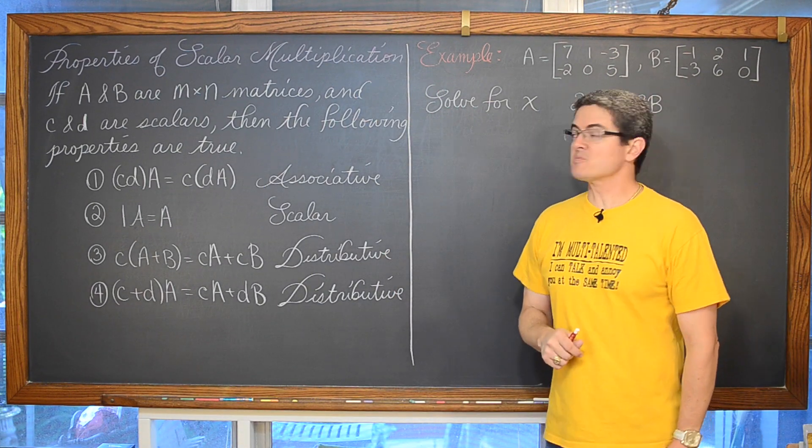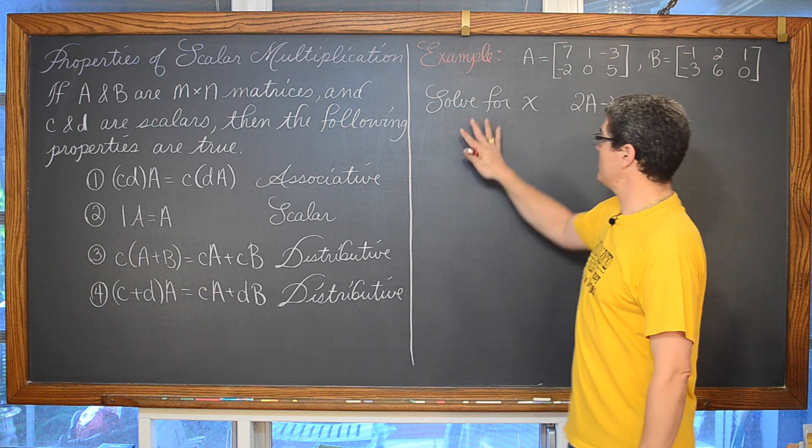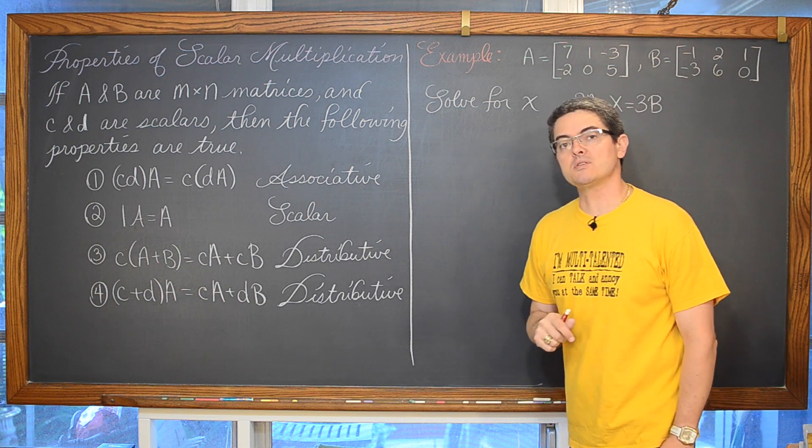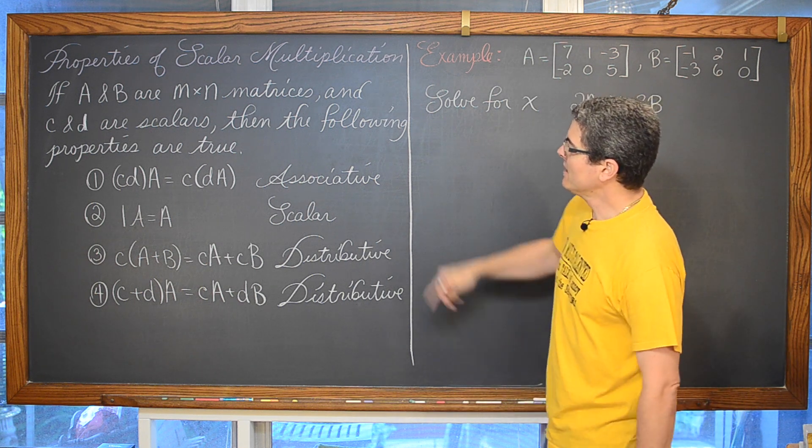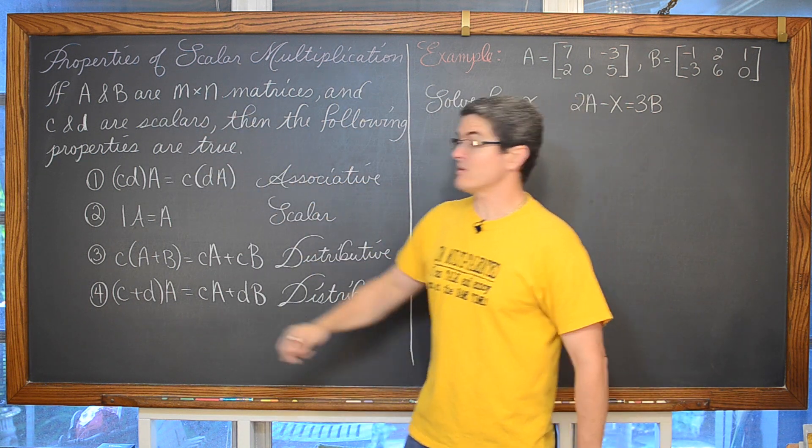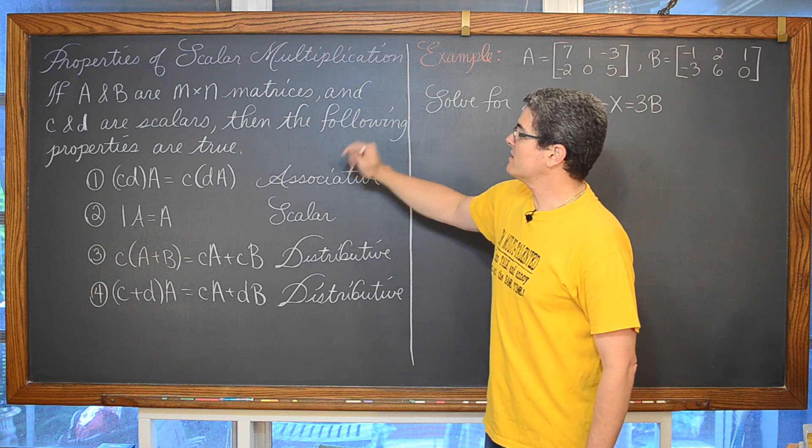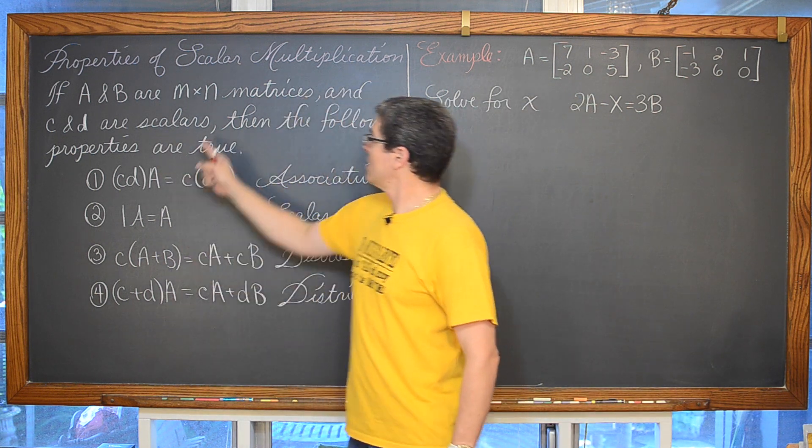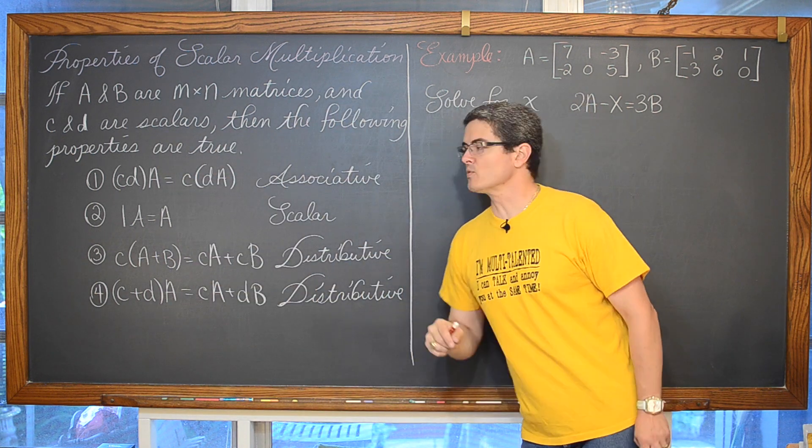Here are the properties, those properties of scalar multiplication. We are going to use a little bit of them to solve this equation involving matrices. If A and B are m by n matrices, so they are the same order or same size, then we have C and D are scalars. Then the following properties are true.